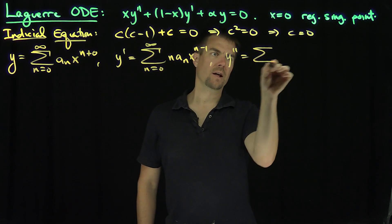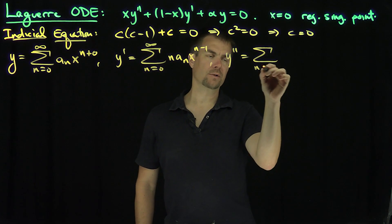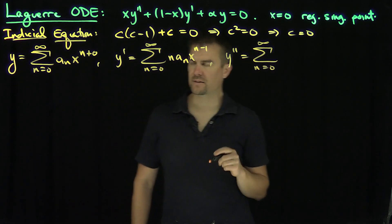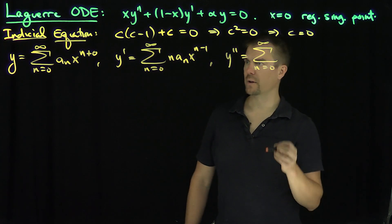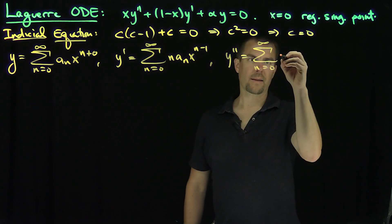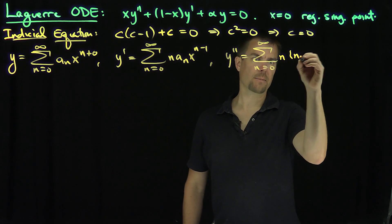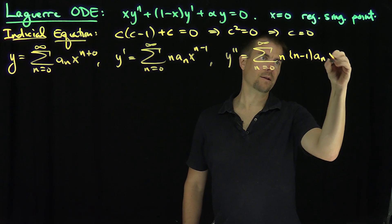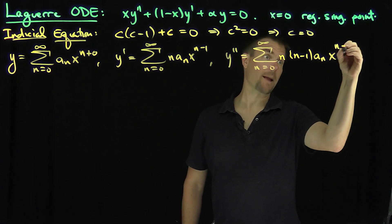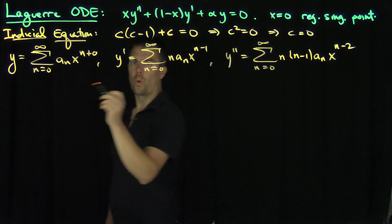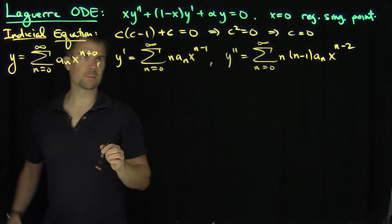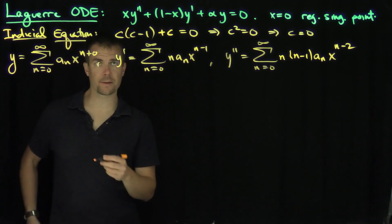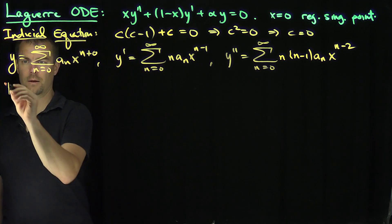Keeping with our convention that every series starts at 0 and shifts later, y double prime is the sum from n equals 0 to infinity of n times n minus 1 times a_n times x to the n minus 2. Those are our y, y prime, and y double prime, which we'll plug into the ODE.